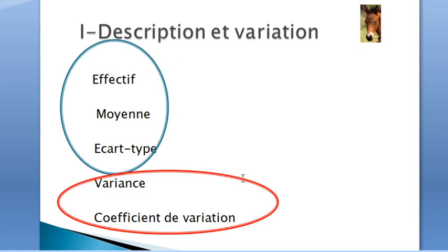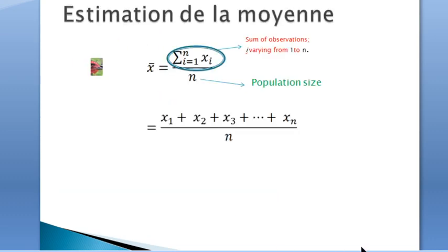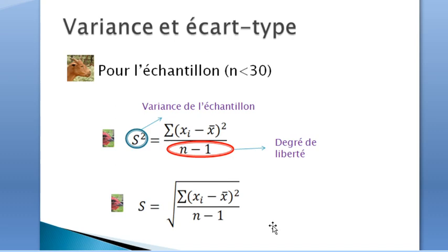Now for the variation of the sample, the variance and the coefficient of variation are used. We won't emphasize that much on the mean estimate as presented on this formula, so we are moving straight away to estimating variance and standard deviation.